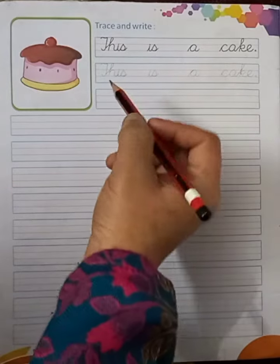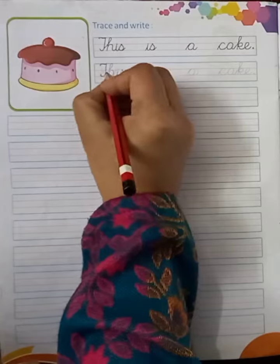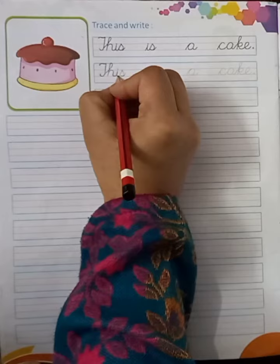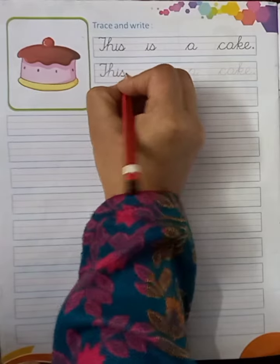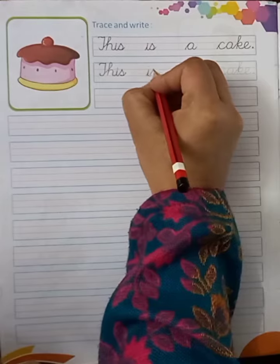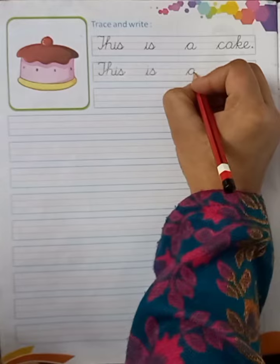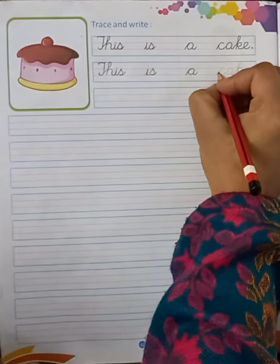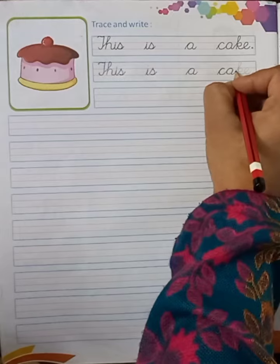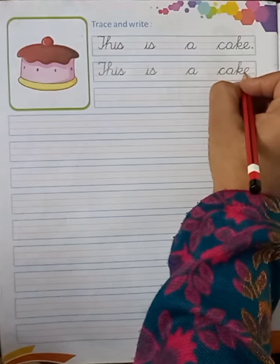T-H-I-S, this in dotted form. I-S, is in dotted form. Then A in dotted form. Then C-A-K-E, cake.